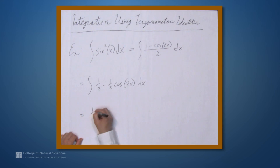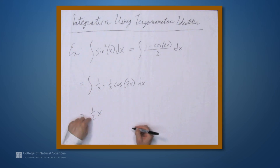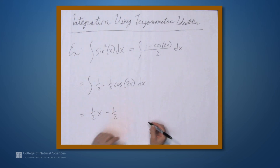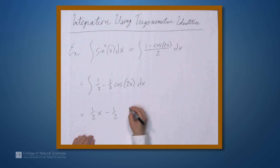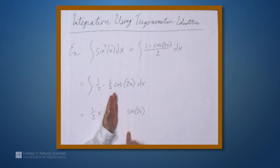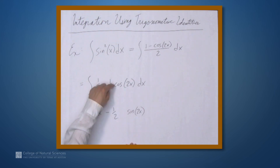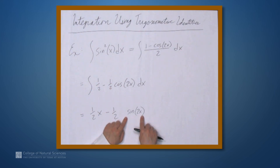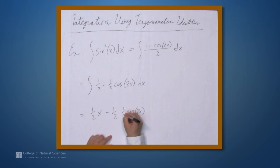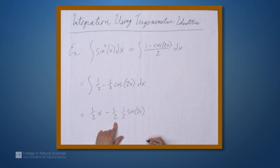The 1/2 part gives us 1/2 x. Then minus 1/2 times the antiderivative of cos2x. The antiderivative of cos2x will involve sin2x. Normally the derivative of sin2x gives us 2cos2x, so to cancel that 2 we need an extra 1/2. So our answer is 1/2 x minus 1/2 · 1/2 · sin2x plus C.